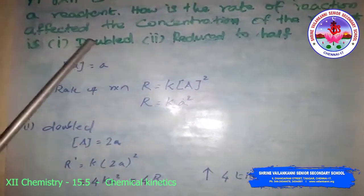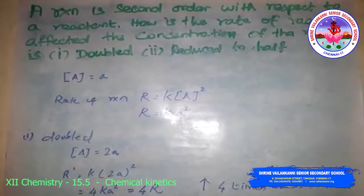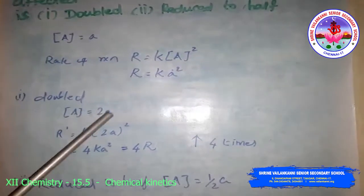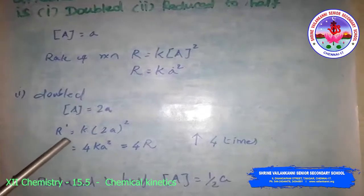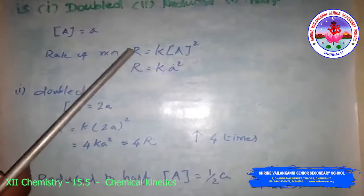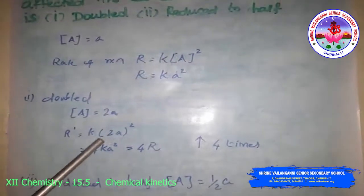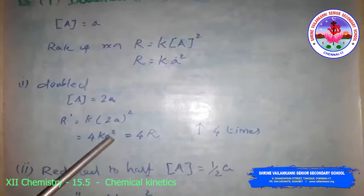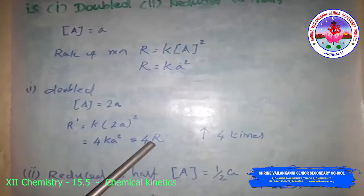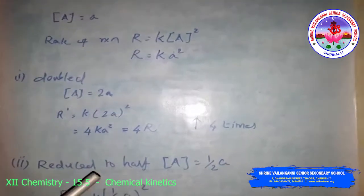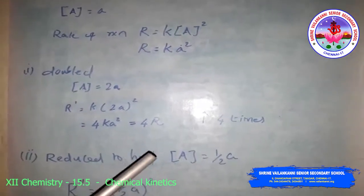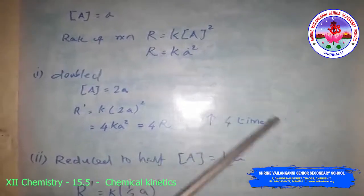When the reactant concentration is doubled, concentration of A becomes 2A. So R' = K(2A)² = 4KA². Since KA² = R, we get R' = 4R. That means when the concentration of the reactant is doubled, the rate of reaction increases by 4 times.